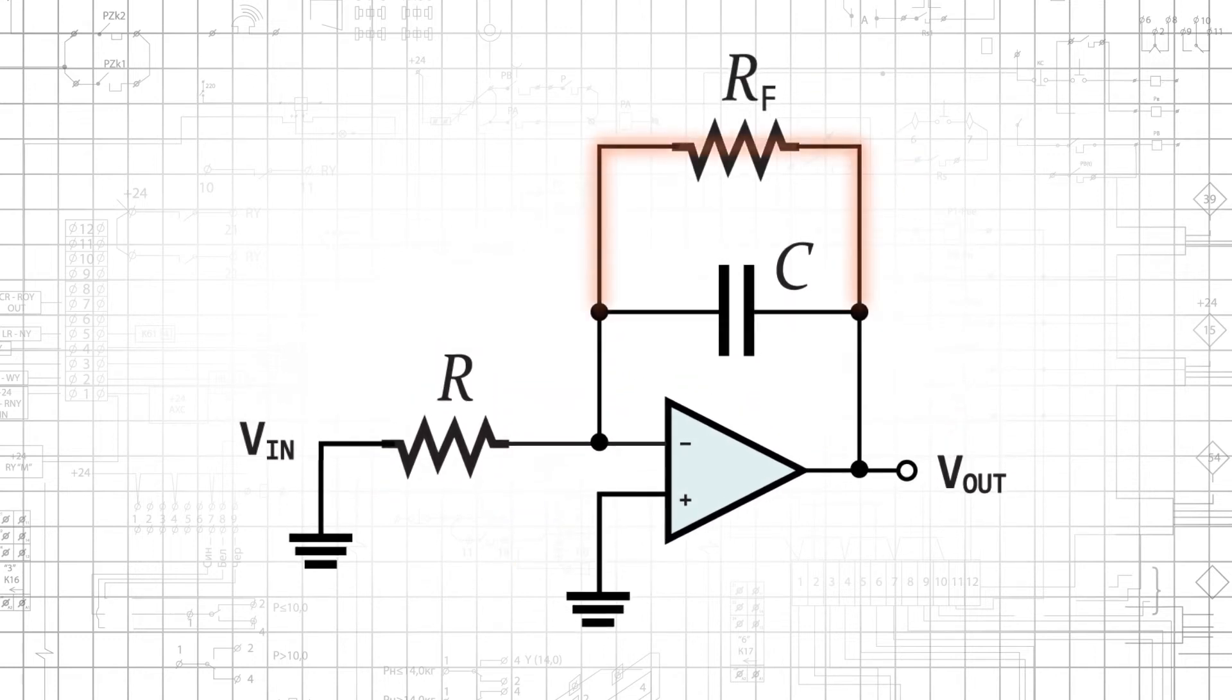By adding a resistor in parallel with the feedback capacitor, we provide a consistent path for these DC currents to flow. This is a simple and effective solution, but it comes with two side effects.